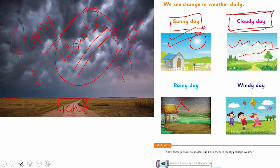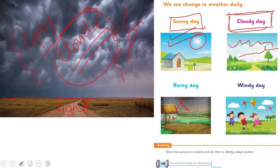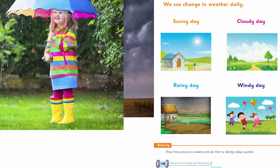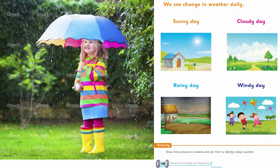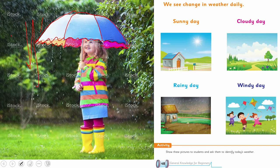So you have learned: number one, sunny day; number two, cloudy day. Now going to the third picture. You see raindrops here, and particularly you see an umbrella — yeh bachi ke saath umbrella hai. She is enjoying a little bit of rain; this is drizzling. You can see the droplets coming on the ground.